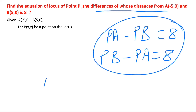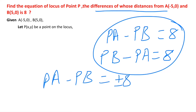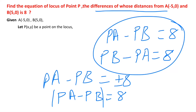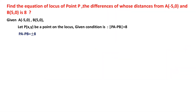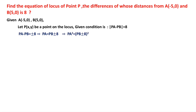We can write this together as |PA - PB| = 8, or equivalently PA minus PB equals ±8. Transposing PB to the right-hand side gives PA = PB ± 8. Now squaring both sides: PA² = (PB ± 8)². We expand this using the identity (a ± b)² = a² + b² ± 2ab.